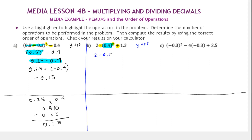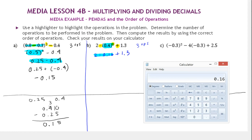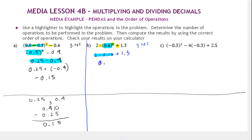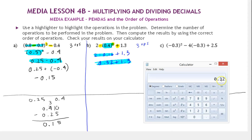Now we have 2 times 0.16 plus 1.3. Multiplication comes next — two times 0.16 is two copies of 16 hundredths, which is 32 hundredths, or 0.32. Our last step is addition: 0.32 plus 1.3 gives us 1.62.